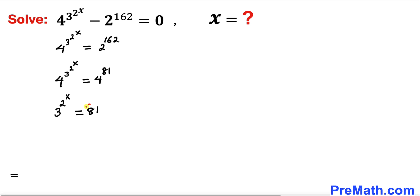Now let's work on this 81. 81 could be written as 3^4. Therefore this equation becomes 3^(2^x) = 3^4. We can see that our bases of 3 are the same on both sides, so we can equate their exponents.